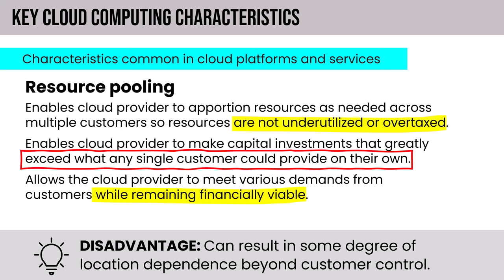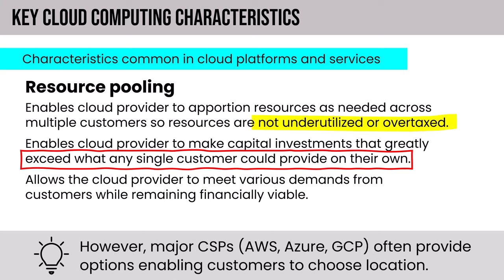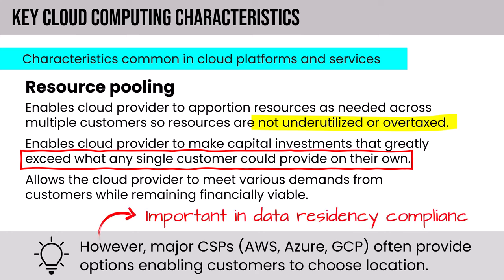One downside of resource pooling is some degree of location dependence beyond the customer's control. However, most major CSPs — AWS, Azure, and Google Cloud Platform — do generally provide flexible options enabling customers to choose location even in their SaaS offerings. The ability to choose location can be very important in data residency compliance — for instance, if data needs to reside in a particular country as would be true in Germany or under GDPR.